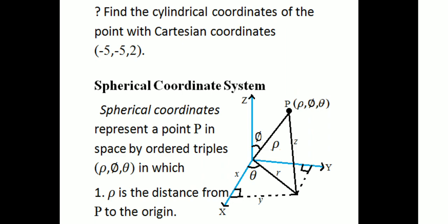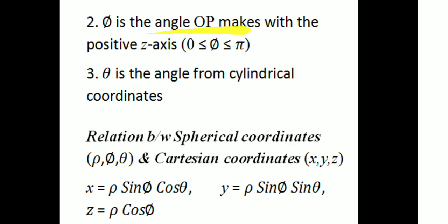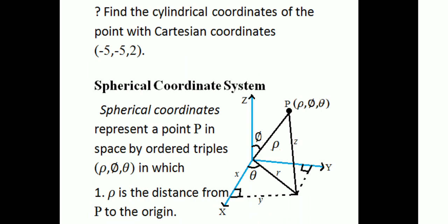Next, we have a spherical coordinate system. Spherical coordinates represent a point P in space by ordered triples rho, phi, theta, in which rho is the distance from P to the origin, phi is the angle OP makes with the positive z-axis — where 0 ≤ phi ≤ π — and theta is the angle from the cylindrical coordinates.